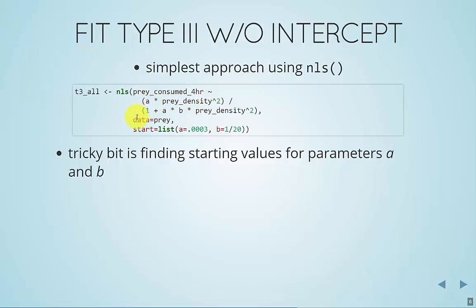So I have different prey densities and we're going up. It's actually, for this model, a little bit more difficult to figure out what the starting values ought to be.